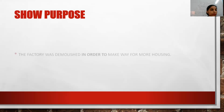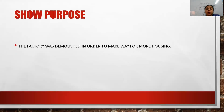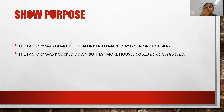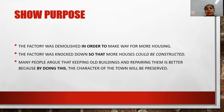Next: how to show purpose. 'The factory was demolished in order to make way for more housing' — I've used 'in order to' to give a purpose. 'The factory was knocked down so that more houses could be constructed' — here I've used 'so that.' I've given the sentences in different ways so you can understand how to make them more impressive. For example: 'Many people argue that keeping old buildings and repairing them is better because by doing this, the character of the town will be preserved.'